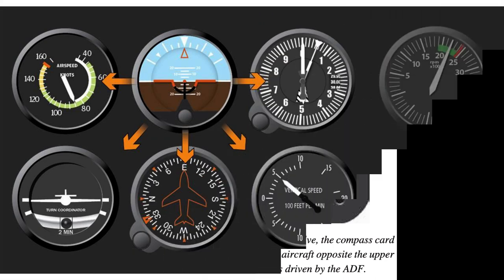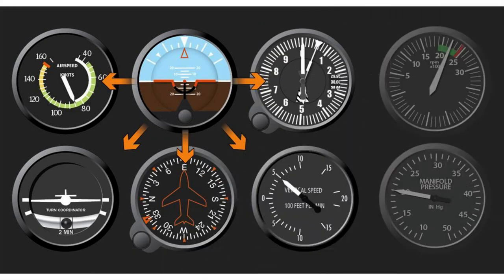As the gyro spools up, make sure there are no abnormal sounds. While taxiing, the instrument should indicate turns in the correct direction and precession should be normal. At idle power settings, the gyroscopic instruments using the vacuum system might not be up to operating speeds and precession might occur more rapidly than during flight.